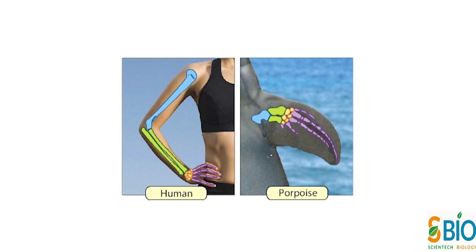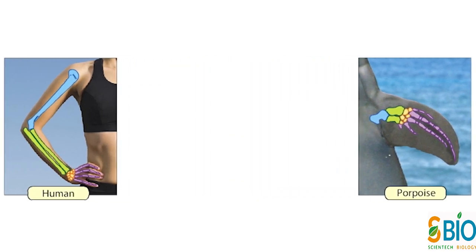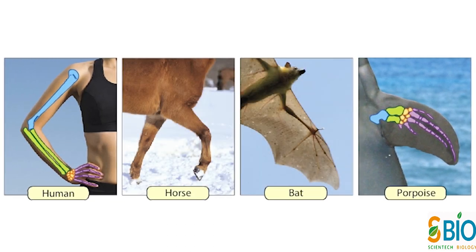इनमें से प्रत्येक में Humerus, Radius, Ulna, Carpals, Metacarpals और Phalanges देखने को मिलते हैं। हालांकि इन Bones में बहुत सारे Modifications हैं, लेकिन वे इस Fact को उजागर करते हैं कि Humans, Porpoises और Uni-mammals एक Common Ancestor को Share करते हैं। Comparative Anatomy हमें प्रत्येक के Evolutionary Past को एक साथ जोड़ने में मदद करती है।